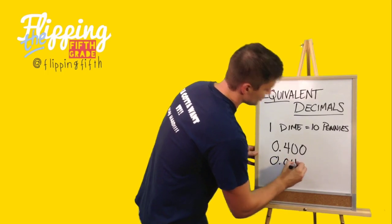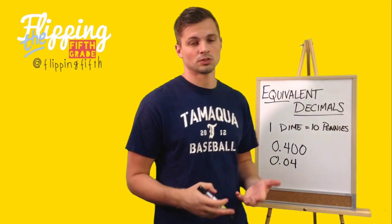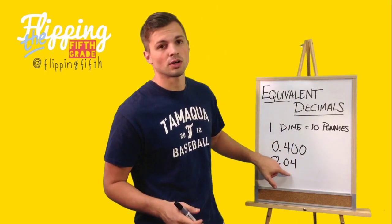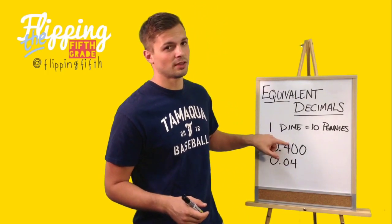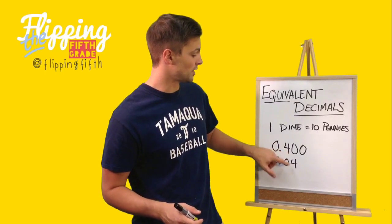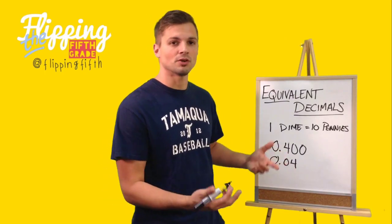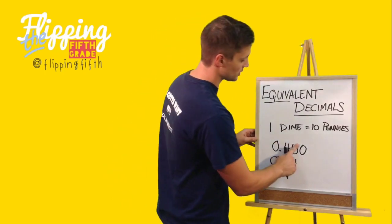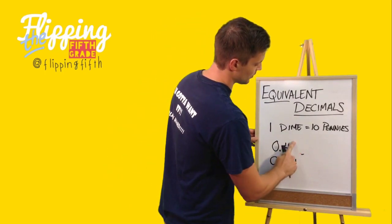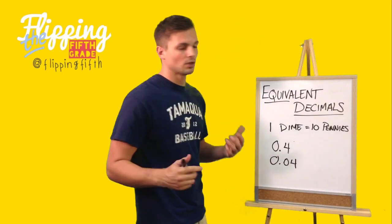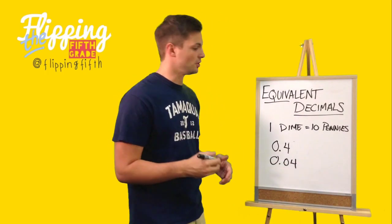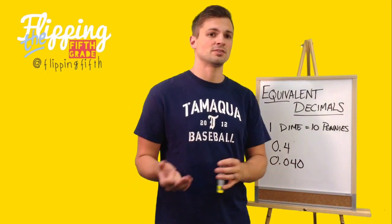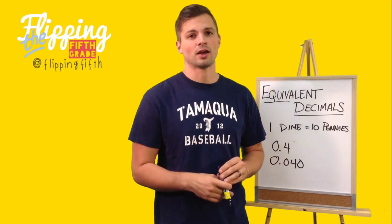However, if we add a zero before the number, we do change the value. Four-tenths becomes four-hundredths. Four-tenths is greater — that's like saying four dimes and four pennies are the same, and we know they are not. So by adding zeros after, or taking them away, you can make equivalent decimals. Equivalent decimals are just a fancy way of saying decimals written differently but having the same value.